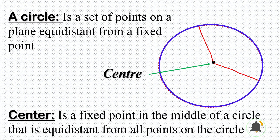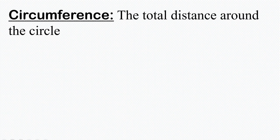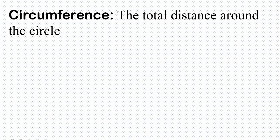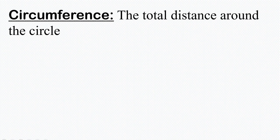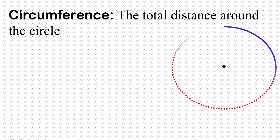Now let's move to the next part of a circle: circumference. When we talk of circumference, we are talking about the total distance around the circle. Some books may record it as the perimeter of the circle. So that is the circumference of the circle — the total distance around the circle.